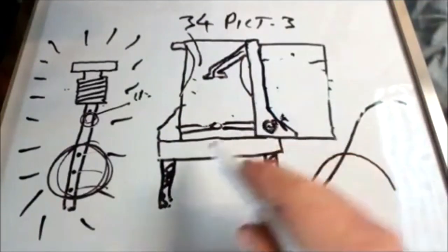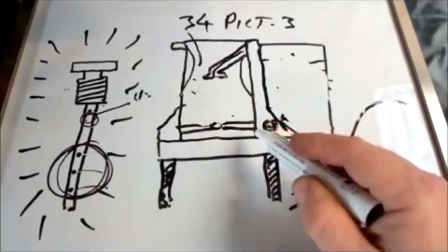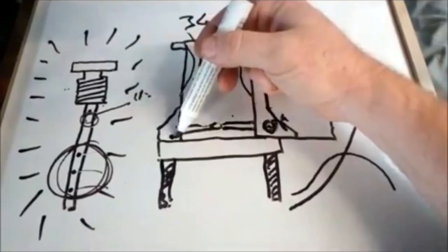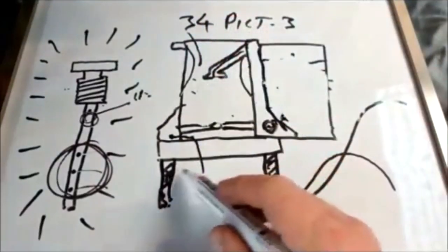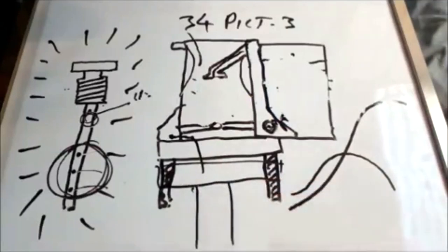On idle the fuel is introduced through a hole underneath the throttle blade. So let's just put it there for argument's sake. And the fuel comes in and dribbles down, goes into your inlet manifold under here, to the cylinders.